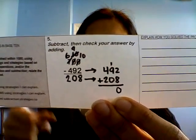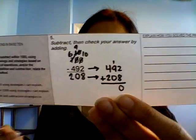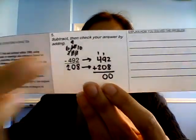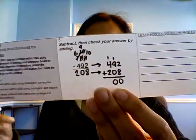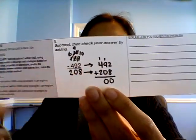So we're going to do 2 plus 8, which is 10. Write the 0, put the 1 over the 10s place. And then 1 plus 9 is 10, plus 0 is 10. So write the 0 and put the 1 over the 100s place. And then 1 plus 4 is 5, plus 2 is 7. 700!